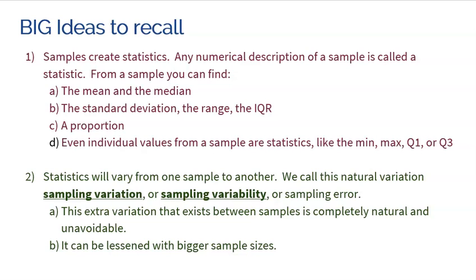Samples create statistics. Any numerical description of a sample is called a statistic. From a sample, you could find the center, like the mean or the median. You could find a numerical description of how that data spreads, for example, standard deviation, the range, the IQR. You can find a proportion if you're talking about categorical data and you want to find the proportion of people that said yes, the proportion of people that eat chocolate ice cream, something like that.